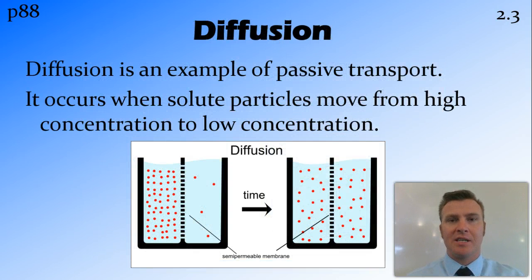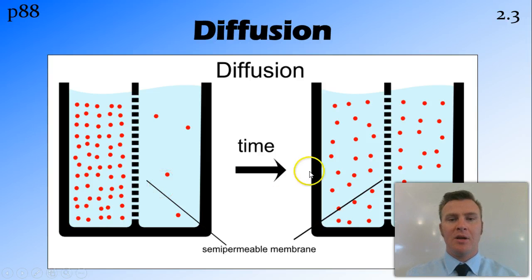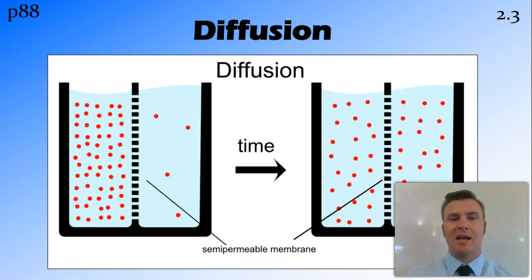Diffusion is the first example of passive transport. It occurs when the solute — the thing that's dissolved in the other thing — moves from a high concentration to a low concentration. Here we have a high concentration of solute in solvent on one side and a low concentration on the other. Over time, the particles of solute will move across the semi-permeable membrane from high concentration to low concentration, ending up with both concentrations being the same.